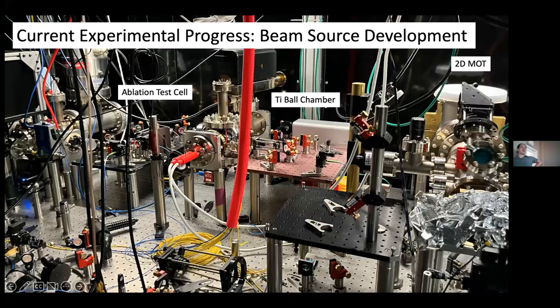And so the last two years basically has been devoted to developing a beam source that's suitable for ultra cold atomic physics studies. So this is currently our laser table. We have more vacuum chambers than you usually expect an AMO experiment to have, I suppose. And one by one, they are an ablation test cell, the tie ball chamber and a 2D MOT chamber. And I'll kind of explain one by one, what each of these guys is and does.